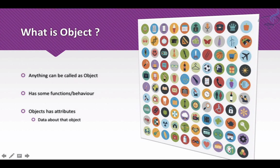Anything can be called an object. From an object you can have many pieces of information. For example, this football has many functions and characteristics, and it has some data about itself. Similarly, an aeroplane has some behavior and some attributes or data which define it — like the size of the aeroplane, the speed, the color, the company, and various other things.